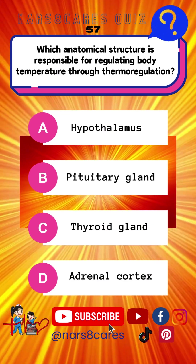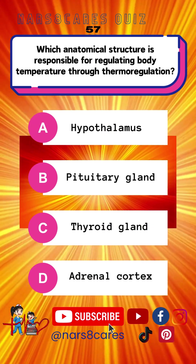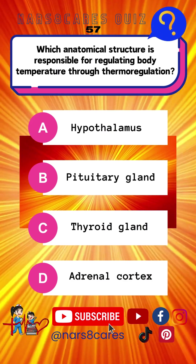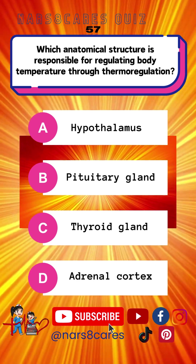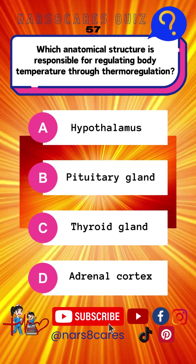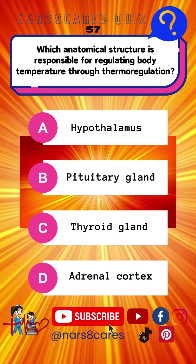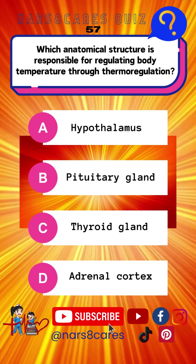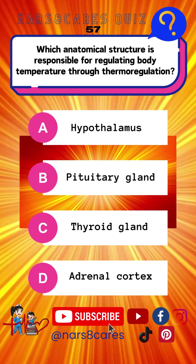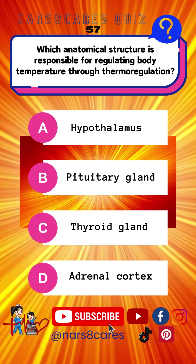57. Which anatomical structure is responsible for regulating body temperature through thermoregulation? A. Hypothalamus. B. Pituitary gland. C. Thyroid gland. D. Adrenal cortex.